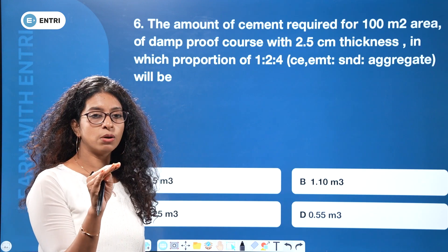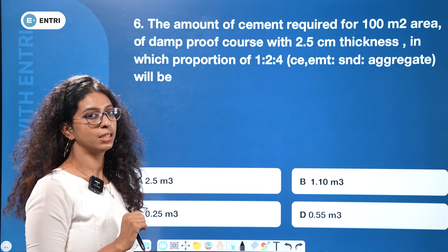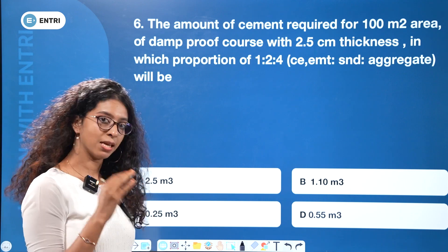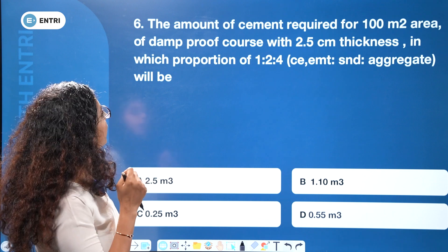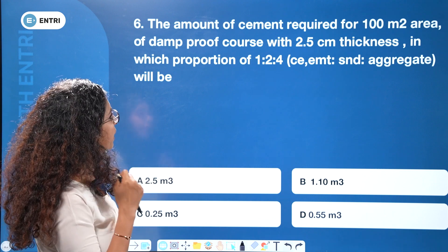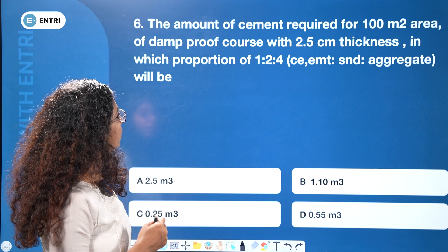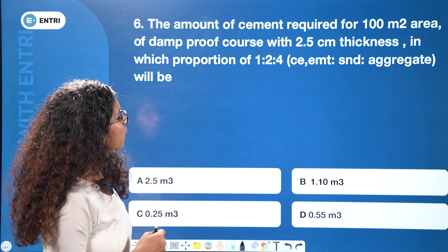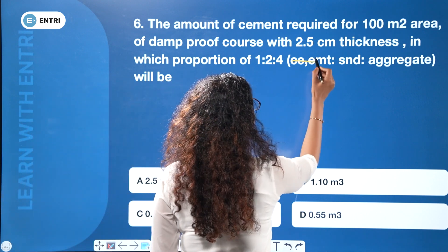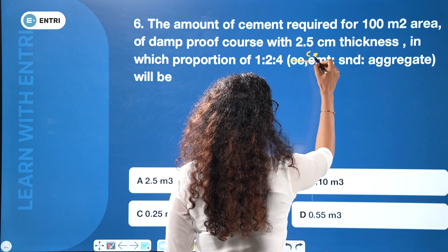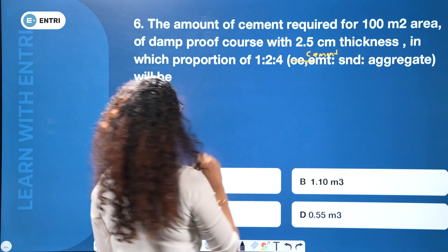Quantity calculation is important, and as an engineer we should learn how to do quantity calculation for exams. The question involves the amount of cement required for 100 m² area of damp proof course with 2.5 cm thickness in proportion 1:2:4 — cement to sand to aggregate.